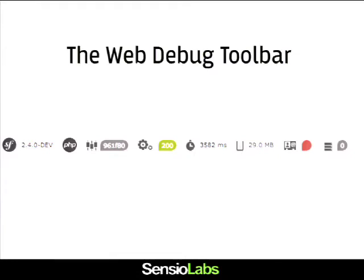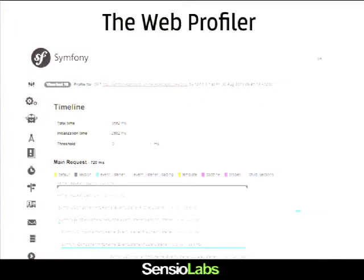When you are in the development environment, at the bottom of every HTML page you have this toolbar giving you a lot of information about the current request and how it behaved. Nowadays all the major frameworks also have the same kind of tool. You can also click on each item to get into what we call the web profiler, which gives you a lot of information about the request, response, and what happened during handling. This tool will be available in Drupal 8 — I have a small module integrating the web profiler and web debug toolbar into Drupal 8.